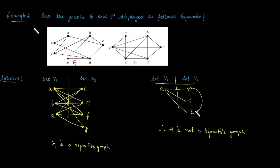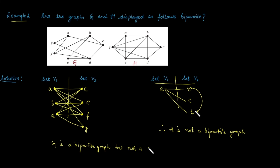Referring back to Example 2, we can check whether graph G is a complete bipartite graph. Since G is bipartite, for it to be complete bipartite every vertex from V1 must connect to every vertex of V2. Vertex A is connected with C, E, F, and G. But vertex B is connected with C, E, and F — it is not connected with G. Therefore graph G is a bipartite graph but not a complete bipartite graph.